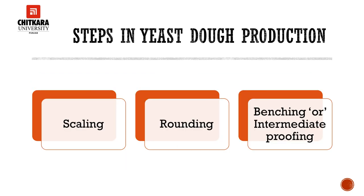The fifth step in yeast dough production is scaling. Using a baker scale, divide the dough into pieces of the same weight according to the product being made. During scaling, allowance is made for weight loss due to evaporation of moisture in the oven. This weight loss is approximately 10 to 13 percent of the weight of the dough. Actual baking loss depends on baking time, size of the unit, and whether it is baked in a pan or free-standing. Scaling should be done rapidly and efficiently to avoid over-fermenting the dough.